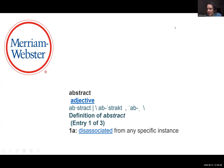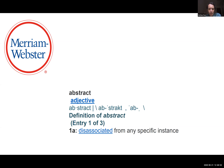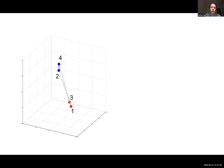Looking at the Merriam-Webster definition, the most relevant definition of 'abstract' for us is: disassociated from any specific instance. So if you can build an invariant representation that encodes only the variable you care about — say parity — you will call this an abstract representation, independent from the high-dimensional details of specific instances.